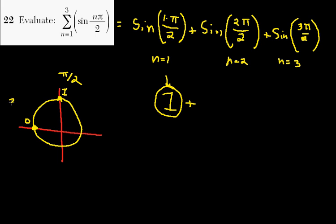So this is 2 pi over 2, or just pi. This value is 0, and then we're going to go down here.